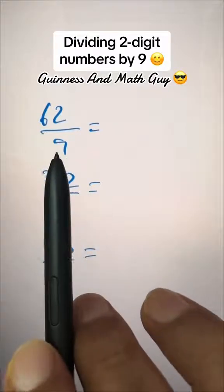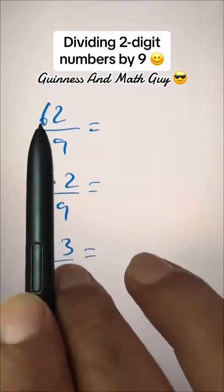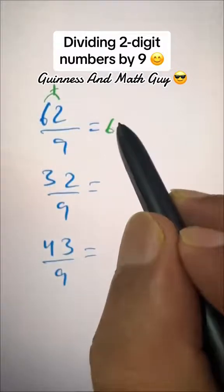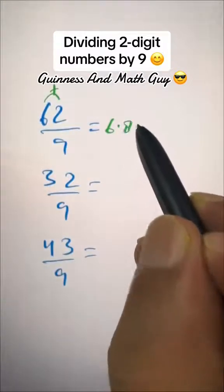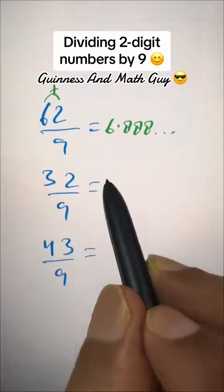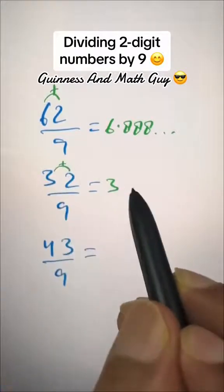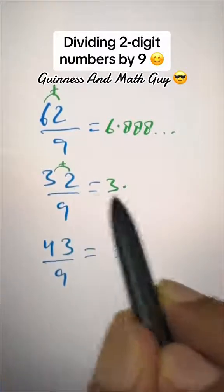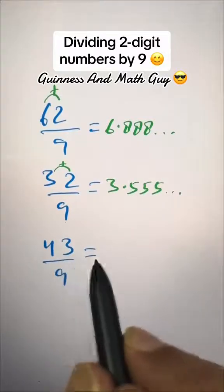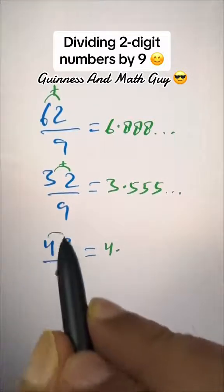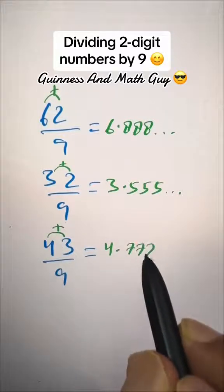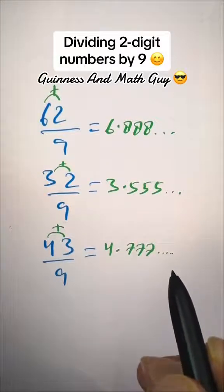For any two-digit number divided by nine, just write this digit here, and six plus two is eight — after the point, eight eight eight and so on. Here, write three; three plus two is five, point five five five and so on. Here, write four; four plus three is seven, seven seven seven and so on.